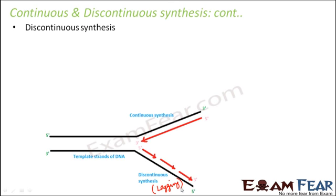DNA polymerase works by continuously adding a new free nucleotide to the 3' end of the growing strand. On the leading strand there is a free 3' end, so DNA polymerase can do its job. But on the lagging strand, this is the 5' end — there is no free 3' hydroxyl end. DNA polymerase can only add a new nucleotide to a pre-existing 3' hydroxyl group, because the 3' end has the hydroxyl group and the 5' end has the phosphate.